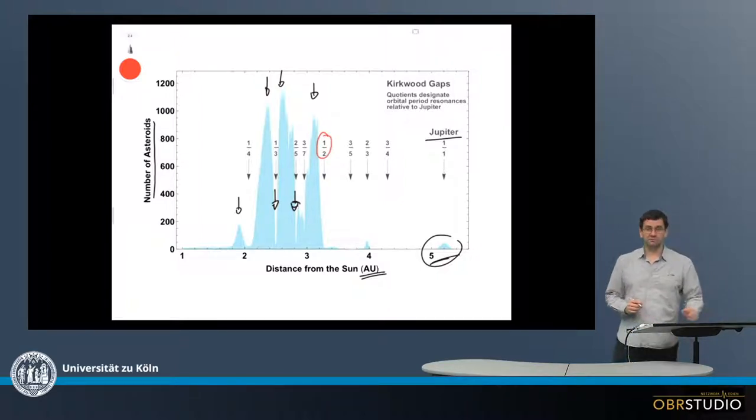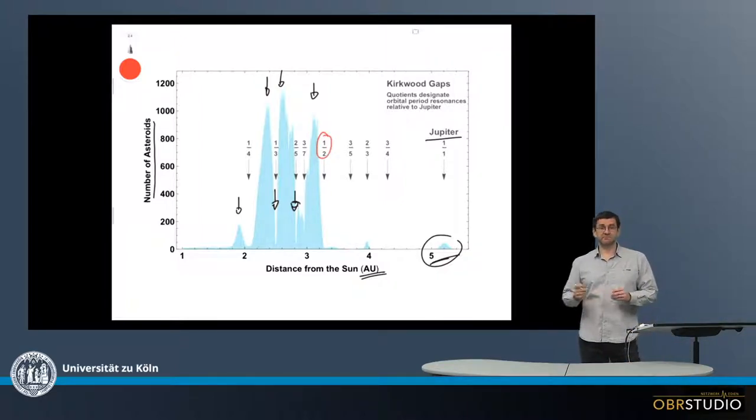For example, here 1 over 2. This means that Jupiter orbits the Sun once and the asteroid in the same time orbits the Sun twice. This is then a 1 to 2 resonance.